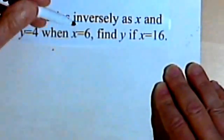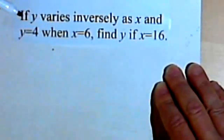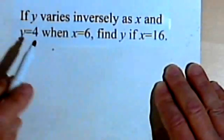If y varies inversely as x, and y equals 4 when x equals 6, find y if x equals 16. So let's do it one step at a time.